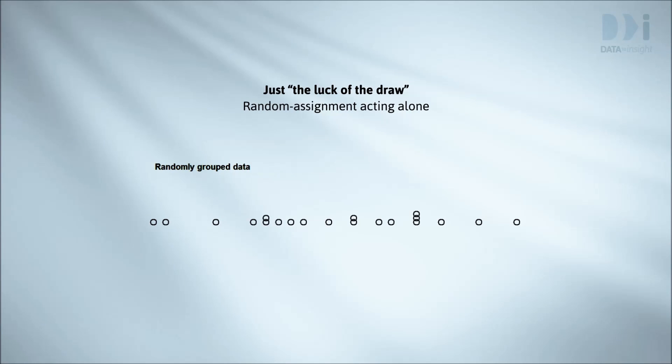In the last video, we saw how randomly labeling some people as belonging to group A and others to group B produces differences in the means of these purely artificial groups. When the group sizes are comparatively small, as in this example, the differences in group means that we observe can be quite large, despite the fact there's no underlying true difference at all.